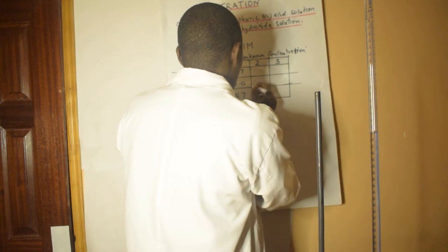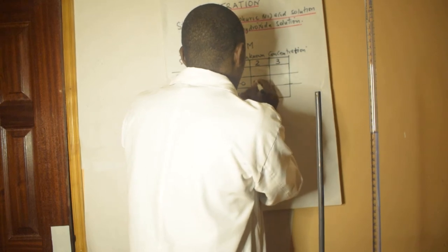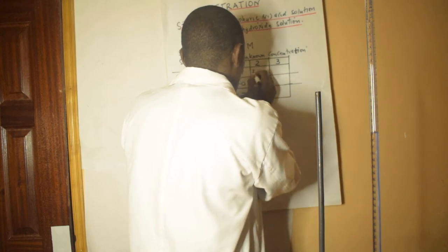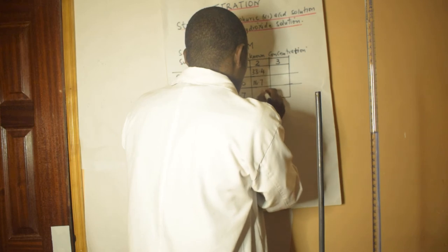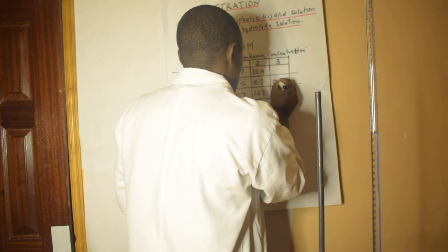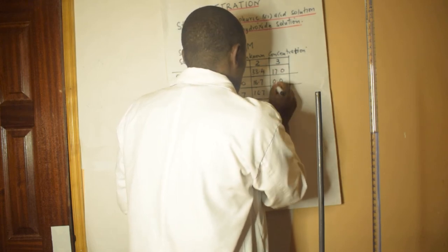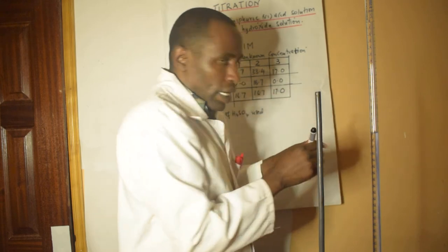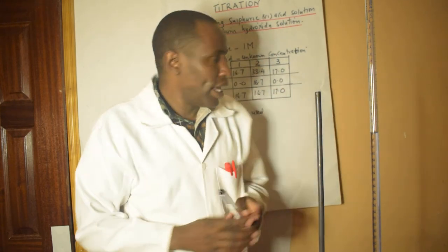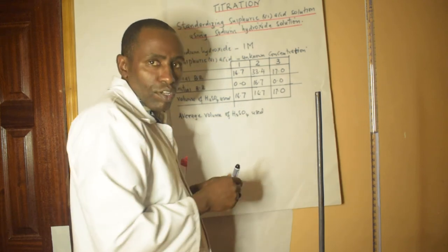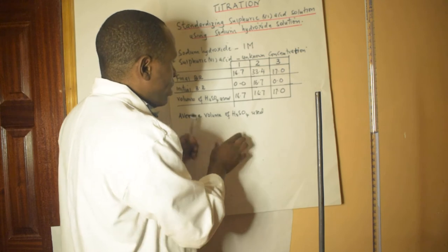So I'm going to have other values. Now, having obtained my values, let me get the average volume of sulfuric acid.